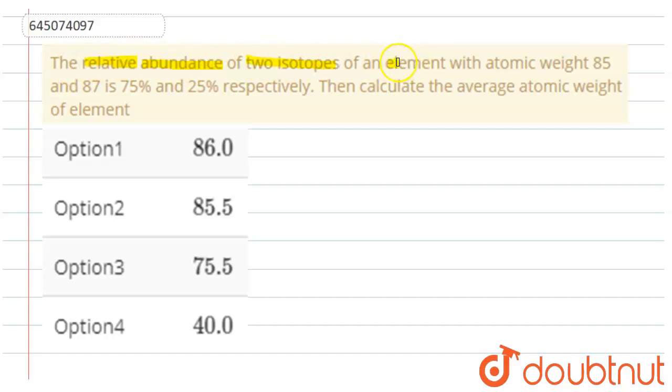Question is: The relative abundance of two isotopes of an element with atomic weight 85 and 87 is 75 percent and 25 percent respectively. Then calculate the average atomic weight of element. So we have given these options. In the question we have given two isotopes.